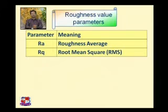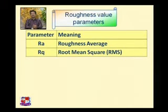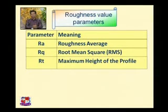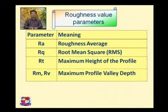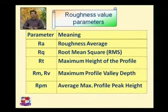For RQ, the formula is: square root of (y1² + y2² + y3² + ... + yn²) / n. That is how the RMS value is computed. RT means maximum height of the profile. RV (used in some countries) means maximum profile valley depth. RPM means average maximum profile peak height.